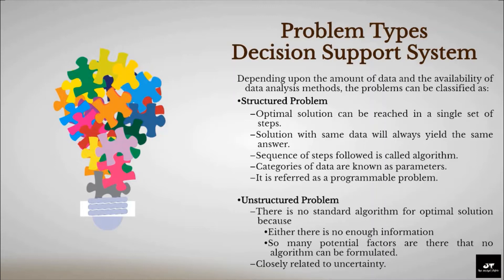Depending upon the amount of data and the availability of data analysis methods, problems can be classified as structured or unstructured. In a structured problem, the optimal solution can be reached in a single set of steps; a solution with the same data will always yield the same answer. The sequence of steps followed to obtain a solution is called an algorithm, and the categories of data supplied are known as parameters. Such problems are referred to as programmable problems. In an unstructured problem, there is no standard algorithm for an optimal solution — either because there is not enough information to form the algorithm, or because there are a large number of potential factors such that no algorithm can be formulated. Since there is no single solution possible for such problems, they are closely related to uncertainty.